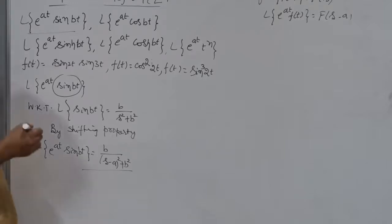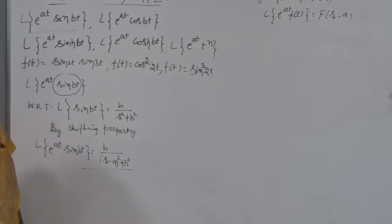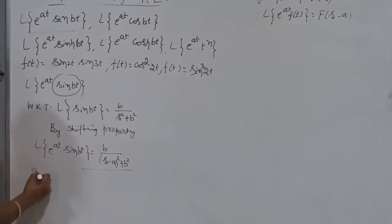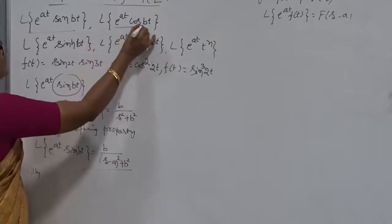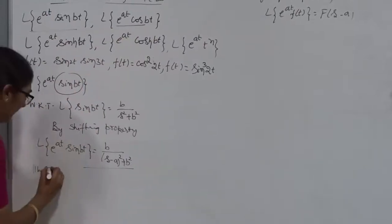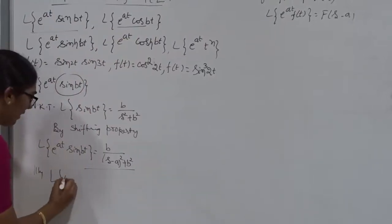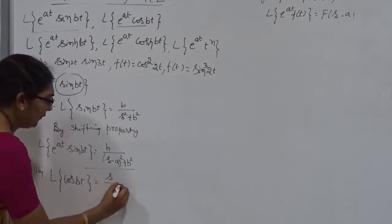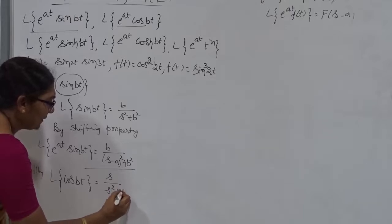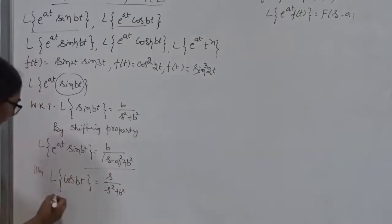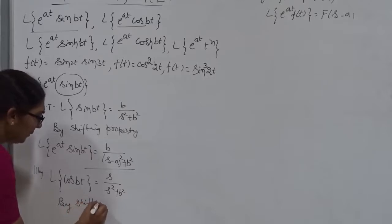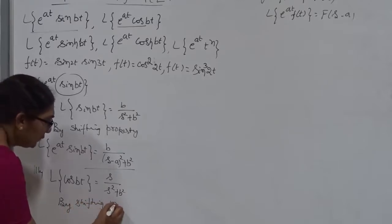Similarly, I want to find out the Laplace Transform of e to the power At into cos Bt. First, you have to find what is the Laplace Transform of cos Bt. From the standard formula, this is s divided by s squared plus B squared. By the Shifting Property — and without mentioning the name of that property, you can't proceed to the next step.